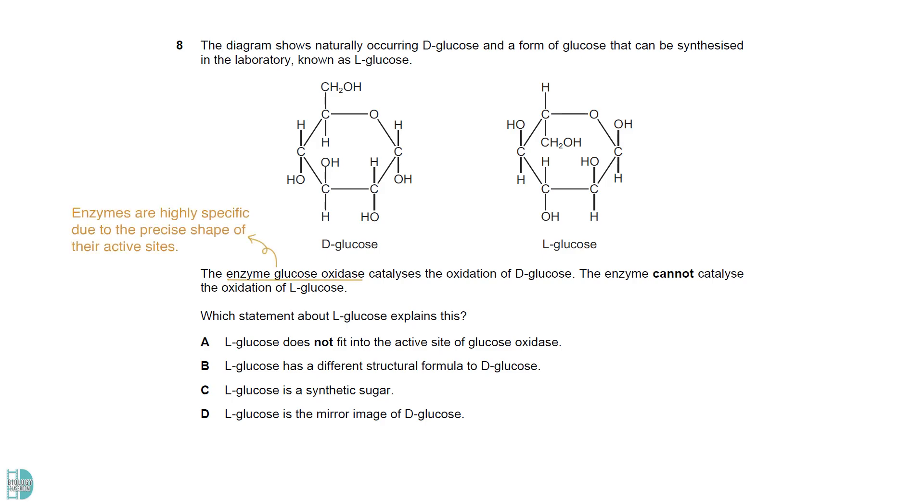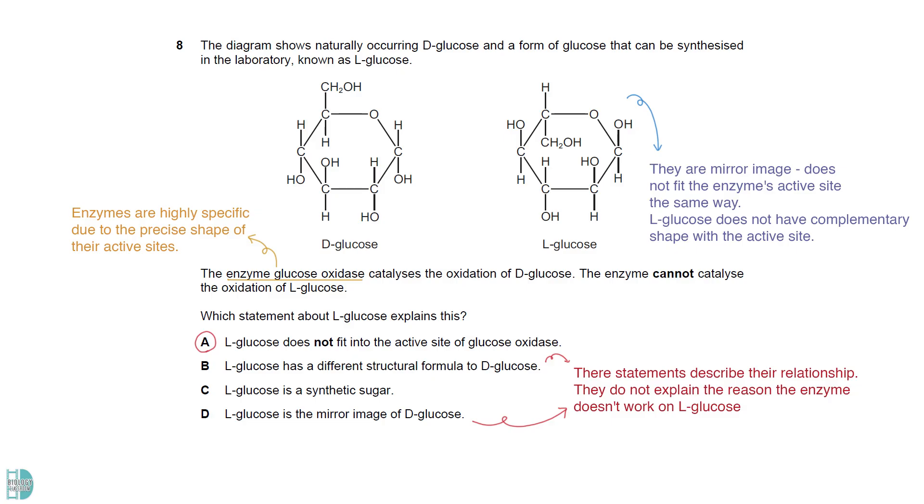Enzymes like glucose oxidase are highly specific due to the precise shape of their active sites. Although L-glucose is the mirror image of D-glucose, as stated in option D, this mirror image does not fit the enzyme's active site the same way. L-glucose does not have complementary shapes with the active site. B and D describe their relationship. They do not explain the key reason the enzyme doesn't work on L-glucose. Option C is wrong because being a synthetic sugar doesn't affect enzyme activity. What matters is the shape and structure, not how the sugar is made.